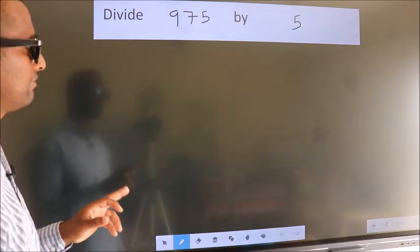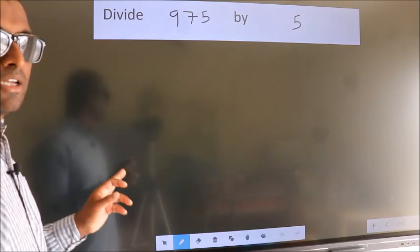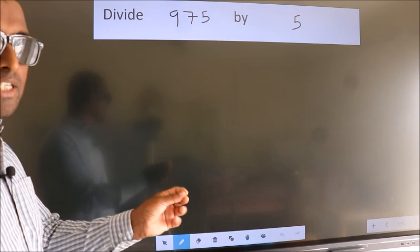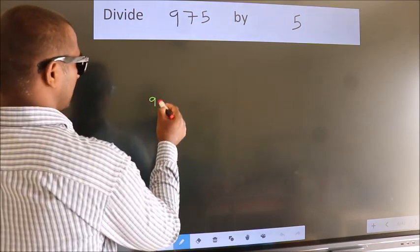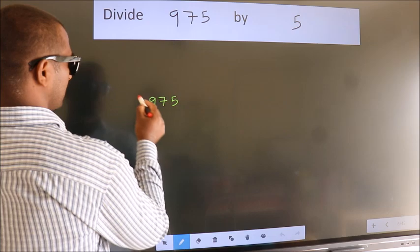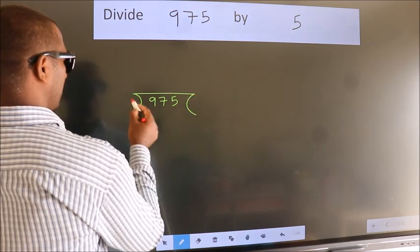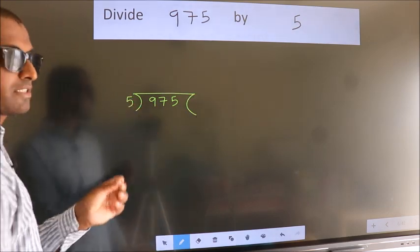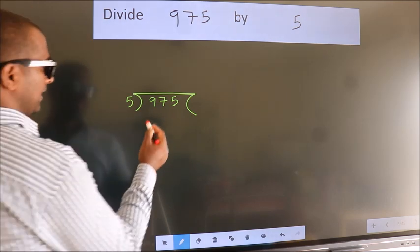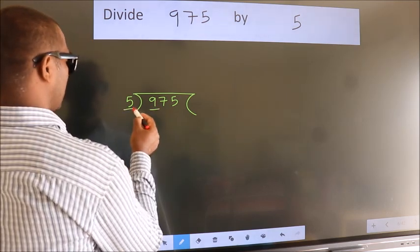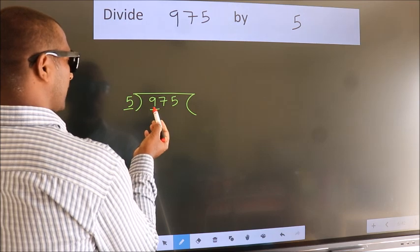To divide 975 by 5, we frame it this way: 975 here, 5 here. This is step one. Next, we have 9 here, 5 here. A number close to 9 in the five table is five ones, which equals 5.